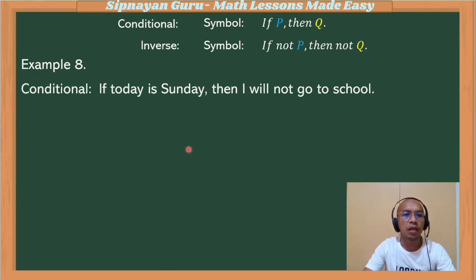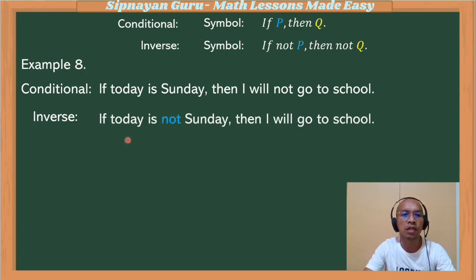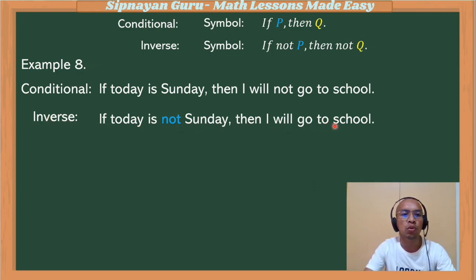Example number eight: if today is Sunday, then I will not go to school. The inverse — we negate the hypothesis: today is Sunday becomes today is not Sunday. The conclusion is I will not go to school, so its opposite is I will go to school. So our inverse is: if today is not Sunday, then I will go to school.